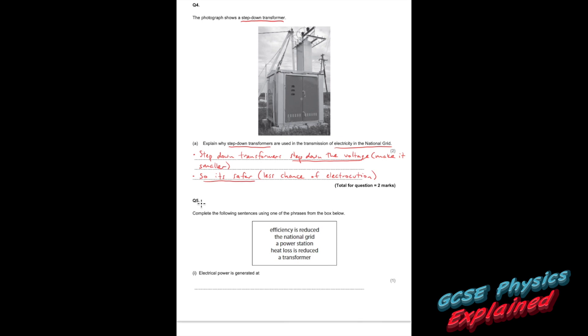Question five. Complete the following sentences using one of the phrases from the box below. Electrical power is generated at... Well, that'll be something to do with the power station. Part two. Electricity is transmitted over long distances by transmission lanes that are part of... Well, that'll be the national grid. Part three. Electricity is transmitted at high voltages so that... Efficiency is reduced. Nope, that'll be so efficiency is increased. So they've tried to catch it out there, be careful. Heat loss is reduced. Now hopefully I don't need to explain that to you because I've already explained it in question three.